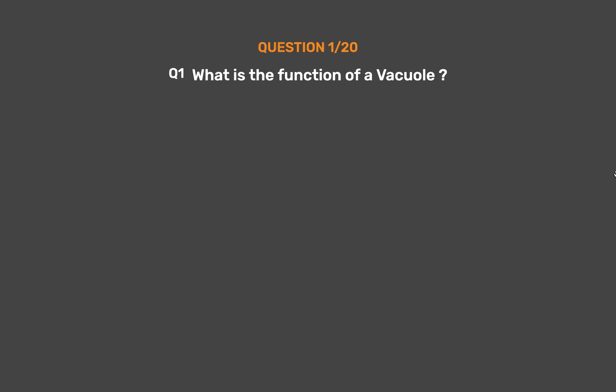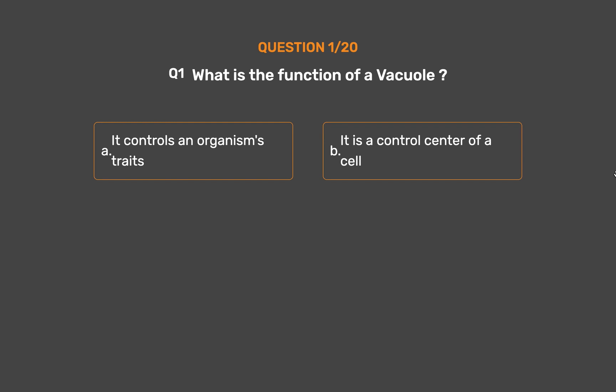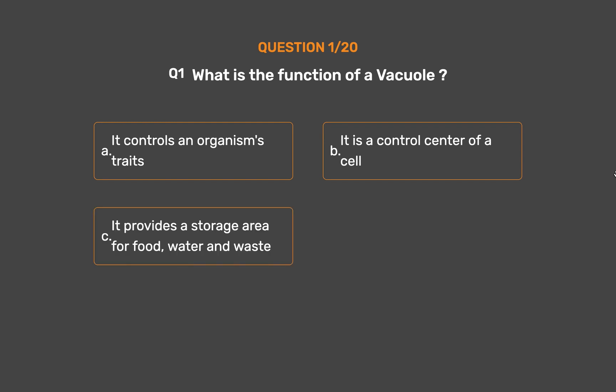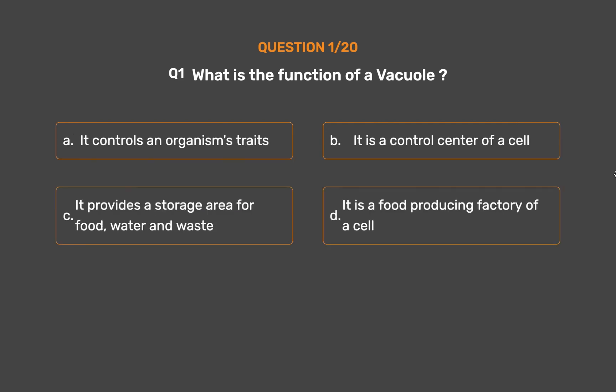Question number 1. What is the function of a vacuole? Option A: It controls an organism's traits. Option B: It is a control center of a cell. Option C: It provides a storage area for food, water and waste. Option D: It is a food producing factory of a cell.